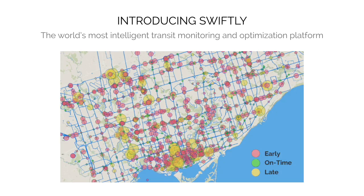Autonomous vehicles will help, but ultimately we need to get more people per vehicle. And one of the best ways to do that is public transportation. So what we've done at Swiftly is we built the world's most intelligent monitoring and optimization platform for public transit.